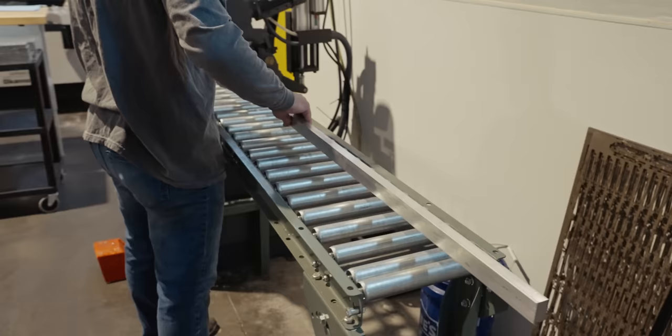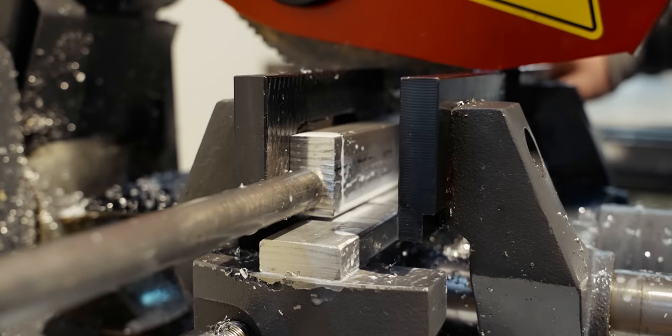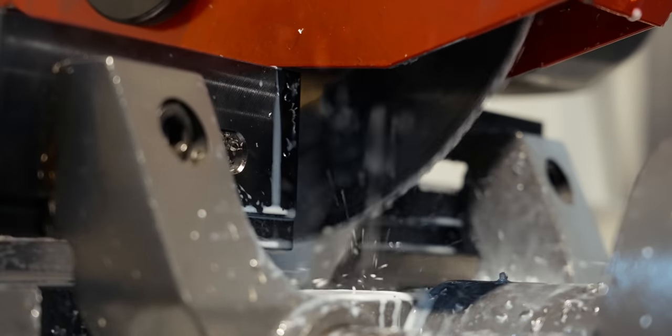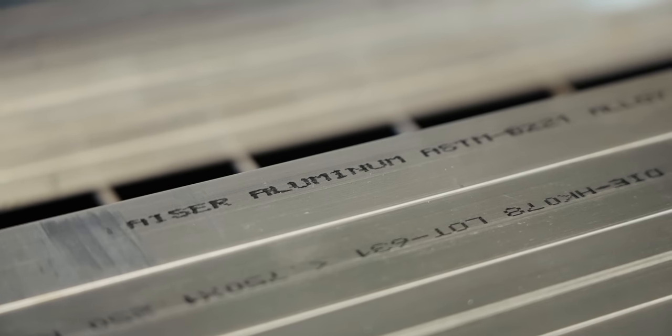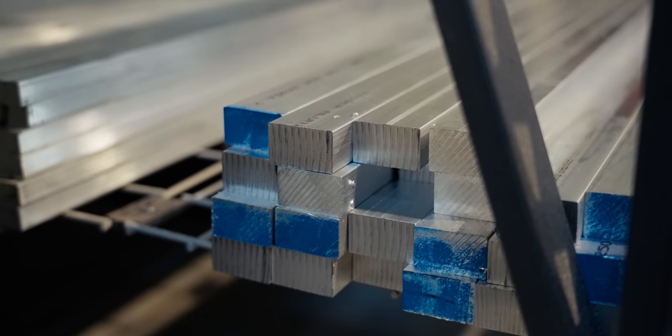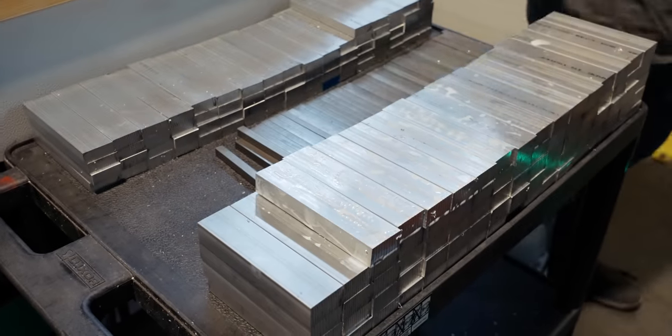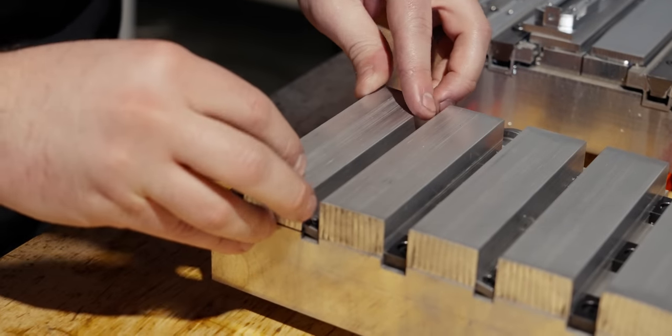Most quality OTFs start their life as a block of aluminum. Specifically, Axial makes their handles out of 6061 T6 bar stock. Aluminum is a strong, lightweight material that can hold up to the rigors of the OTF mechanism, while not making the knife feel like a brick in your pocket. After the bar stock is cut down, it's deburred and prepped for the mill.